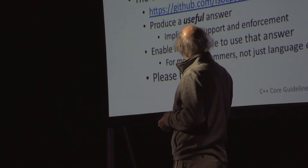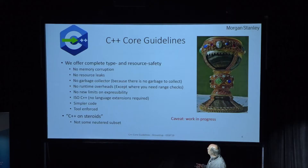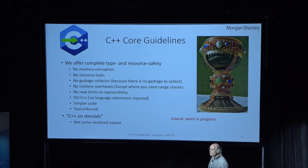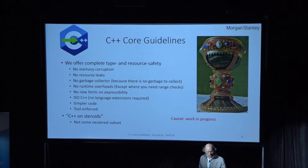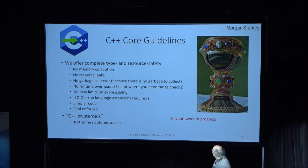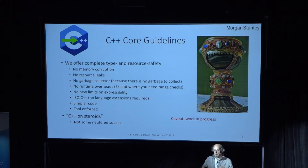To give an executive summary: we'd like to have C++ where we can write code that is completely type and resource safe — no memory corruption, no leaks, no garbage collector because we don't generate any garbage, no runtime overhead compared to C++, and no limits to expressibility. ISO C++ — I don't want to get involved in designing a new language. We want to simplify the code, because that is a key to both maintainability and performance. And we want tool enforcement, because if you say a set of rules, people don't follow them. People break the rules without knowing it.